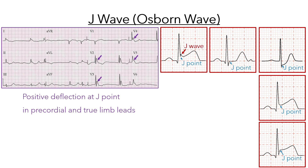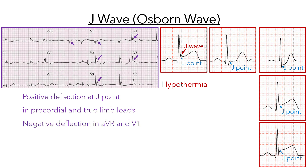slow deflection of uncertain origin, originally described in relation to hypothermia. It will appear as a reciprocal negative deflection in AVR and V1.